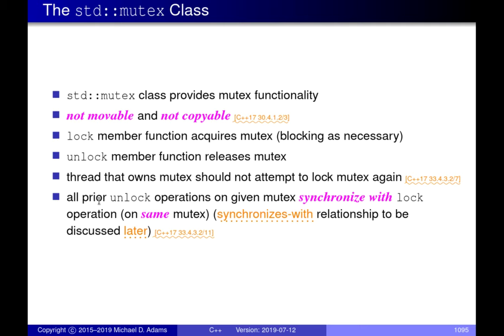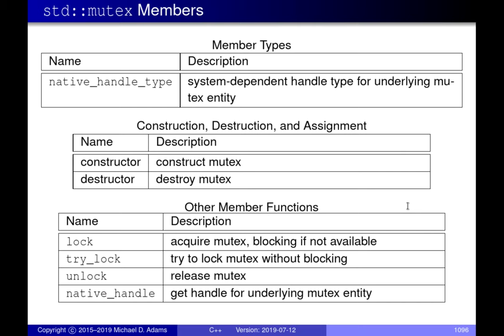This synchronizes-with relationship allows us to establish happens-before relationships between two different threads, which is one big reason for wanting to use mutexes. In terms of the members provided by std::mutex, there's a native_handle_type which gives you hooks into the underlying OS implementation — maybe to get additional functionality not directly accessible via the std::mutex interface. In this course we'll never need to use it; it's for more advanced, platform-specific code.